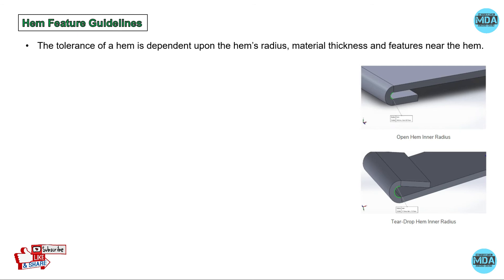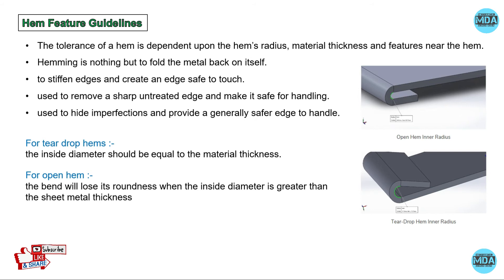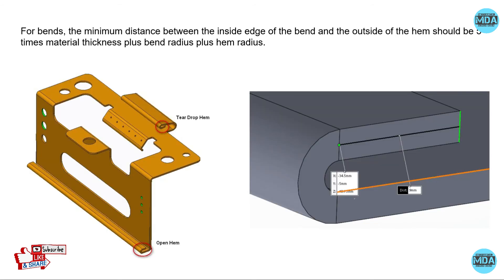For hem feature guidelines, there are two types: open hem and teardrop hem. Hemming is folding the metal back on itself to stiffen the edge, remove sharp untreated edges for safe handling, hide imperfections, and provide a safer edge. For a teardrop hem, the inside diameter should be equal to the thickness. For an open hem, the inside diameter must be less than the material thickness to maintain roundness. The minimum distance between the inside edge of the bend and the outside of the hem should be five times the material thickness plus the bend radius plus hem radius.